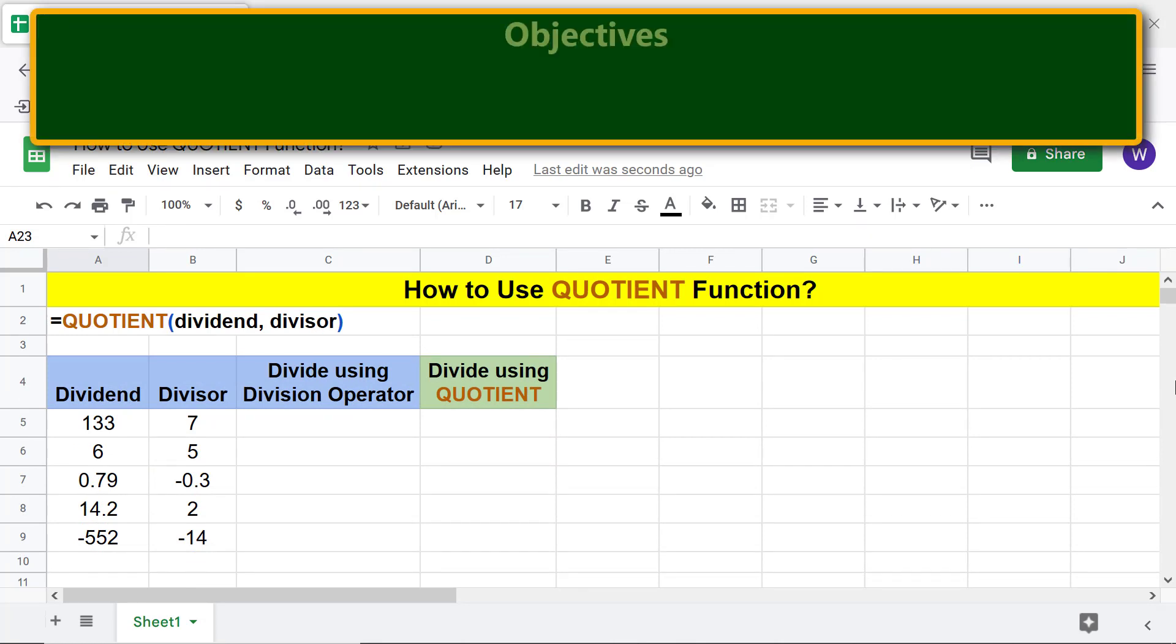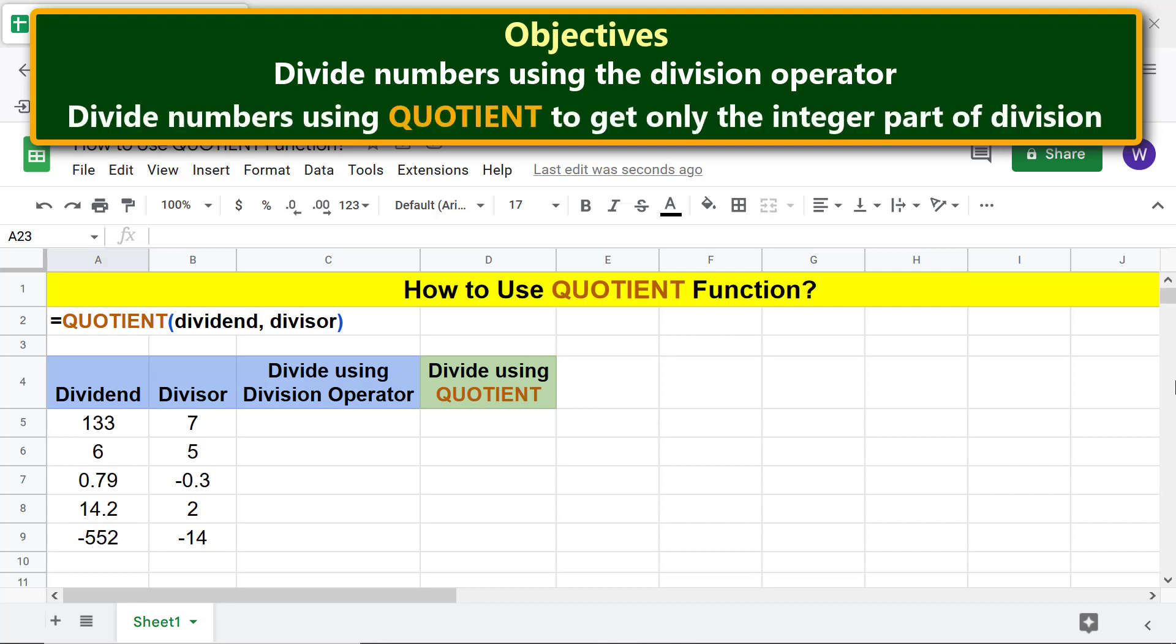Alright, here are the objectives of this tutorial. Divide numbers using the division operator. Divide numbers using Quotient to get only the integer part of division. Moving forward, we will first divide the numbers using the division operator.